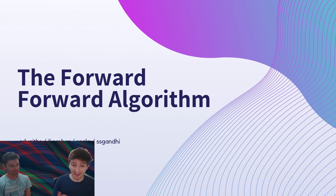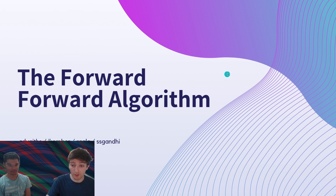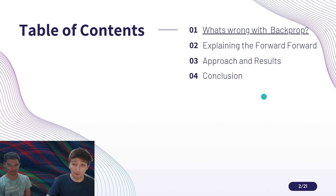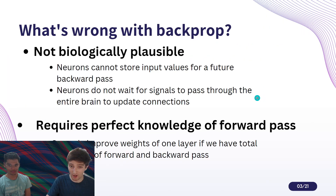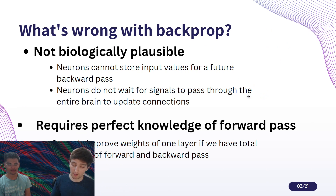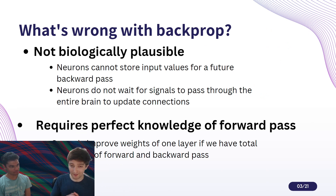You're probably thinking, hey, I like backpropagation — it works pretty well for me, what's wrong with it? Well, unfortunately, backpropagation is not biologically plausible. So if we're trying to model something like human intelligence, backpropagation will probably not be the solution.